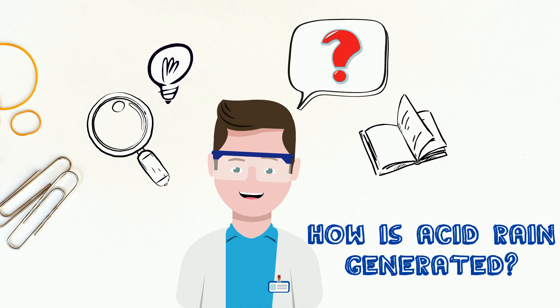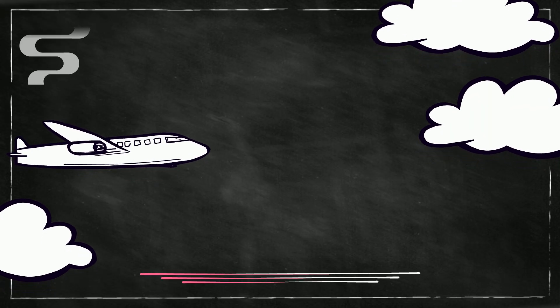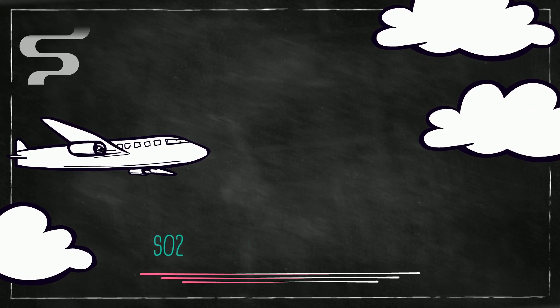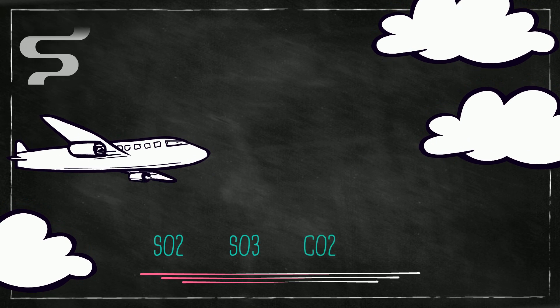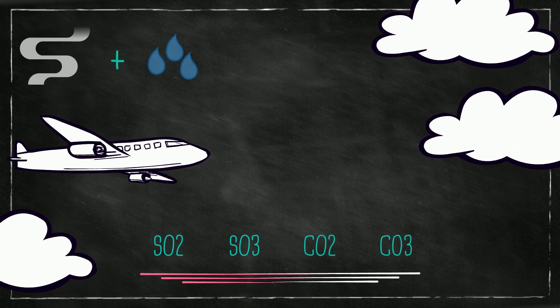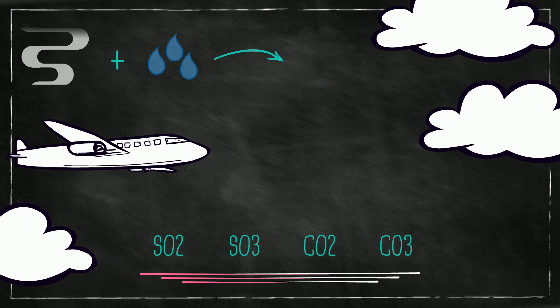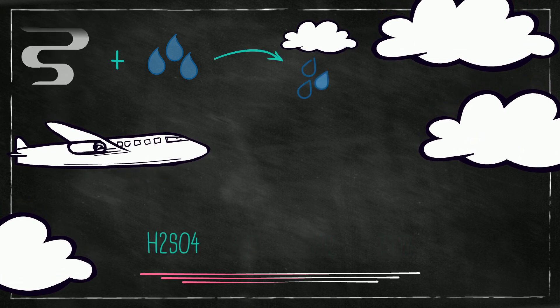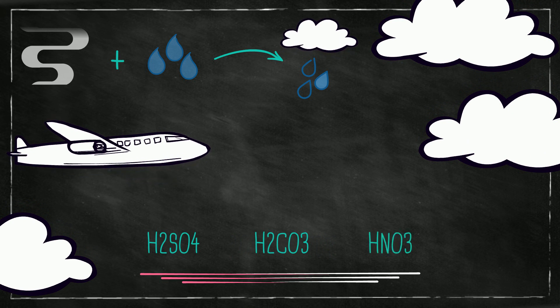How is acid rain generated? When there are gases in the atmosphere such as SO2, SO3, CO2, CO3, among others, and they combine with water vapor also present in the air, it forms several acids such as sulfuric acid, carbonic acid, or nitric acid.